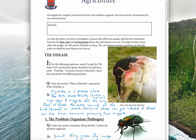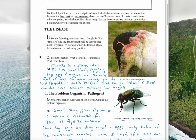For this dot point we need to investigate a disease that affects an animal and how the interaction between the host, pest, and environment allows the disease to occur. To make it easier across dot points, we're going to choose fly strike and sheep. Fly strike is caused by an insect pest; however, it is considered a disease as the fly strike on the back of the sheep will allow infection to occur. So fly strike is considered a disease caused by a disease-causing organism.